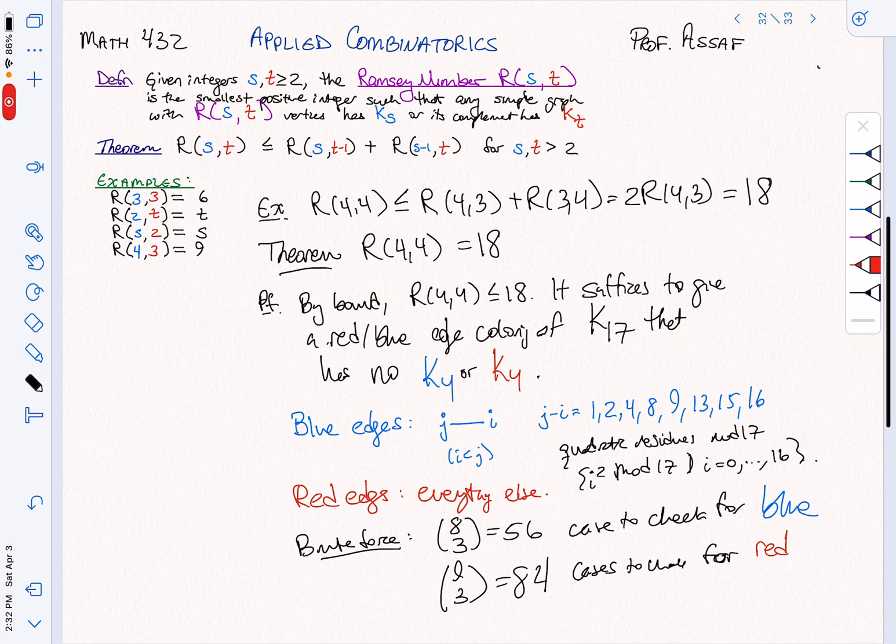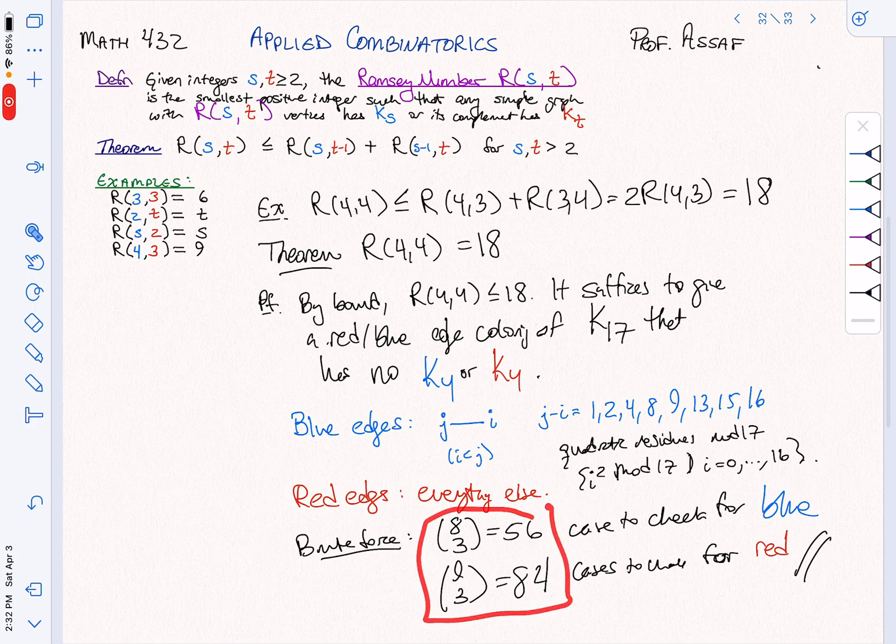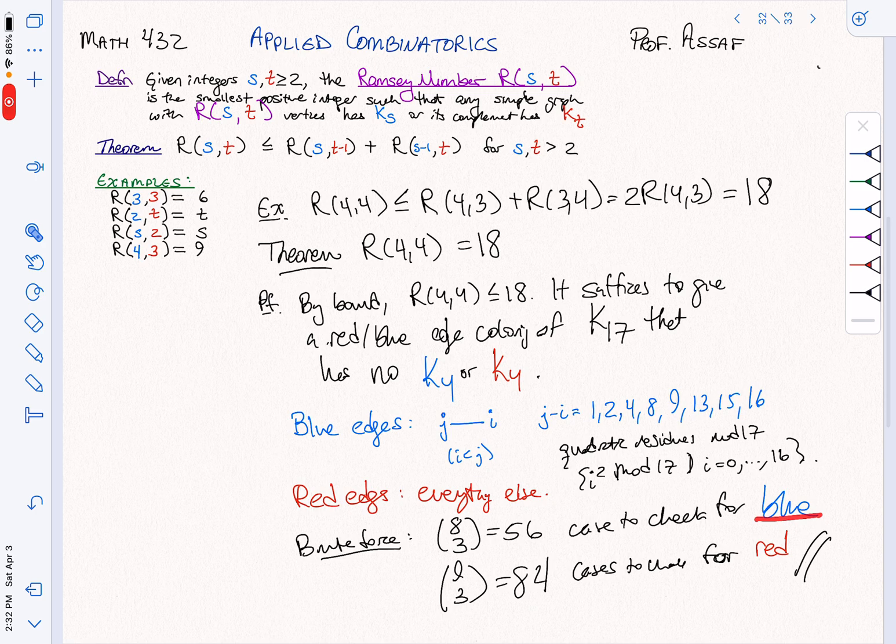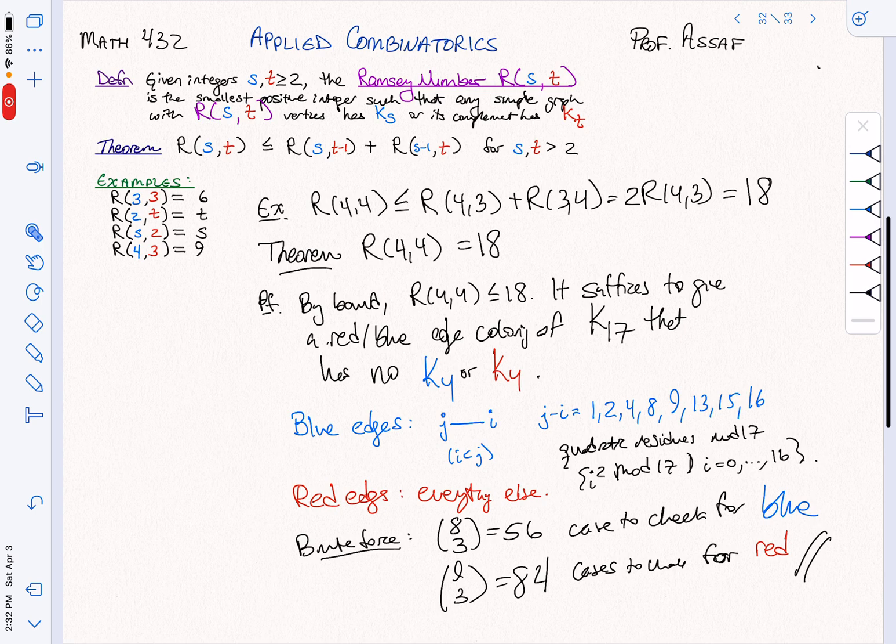So the cleverness here is not so much in the proof of checking the cases, but in terms of coming up with this answer works. Out of all possible red-blue edge colorings for K17, and it's huge, the number of possibilities here. It's more than the number of atoms in the universe. And we can reduce it to something the computer can check, or we could even write this down by hand if we're patient enough. There are 56 cases to check that we don't have a blue K4, and there are 84 cases to check that we don't have a red K4. So that's pretty remarkable that we can get this theorem.